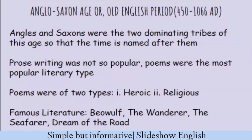The poems were written in a long and narrative style. They were mainly of two types: number one heroic, and number two religious. Poems like Beowulf, The Wanderer, The Seafarer, and Dream of the Rood were written. Although we don't properly know who really wrote these things, they are very good evidence of the socio-cultural background of the Anglo-Saxon age. The Angles and Saxons were the two dominating tribes who lived in old Britain and contributed so much to the literature of this time.